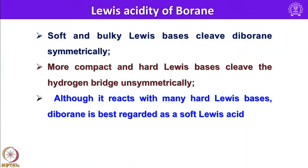Let us look into the properties of these boranes. These boranes are Lewis acids because of electron deficiency, and they are cleaved by soft and bulky Lewis bases. There are two ways of cleaving boranes: symmetrical cleaving and unsymmetrical cleaving. Soft and bulky Lewis bases cleave diborane symmetrically, and more compact and hard Lewis bases cleave the hydrogen bridge unsymmetrically. Although they react with many hard Lewis bases, diborane is best regarded as a soft Lewis acid.